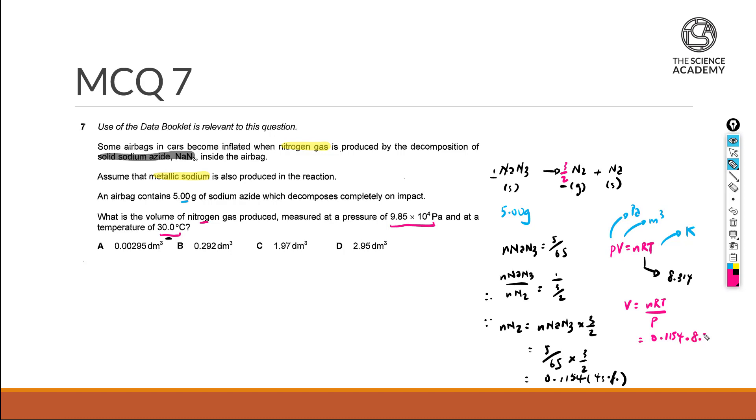Multiply by your 8.314. Multiply by 30 plus 273 to change your degree Celsius to your Kelvin.